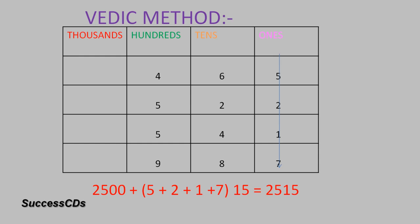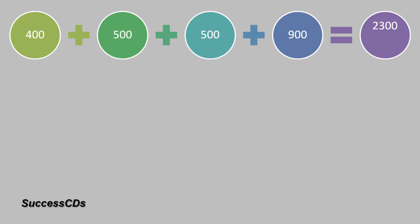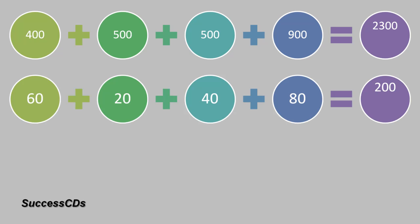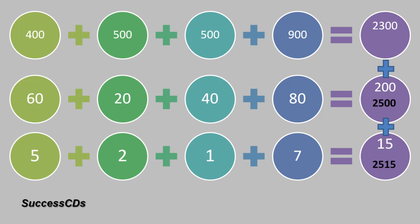Here I will show you the steps we have taken: 400 plus 500 plus 500 plus 900 — we added the hundreds place numbers and got 2300. Then we added the tens place numbers and got 200. Then we added the ones, totaling to 15. So 2300 plus 200 gave us 2500, plus 15 gave us the answer 2515.